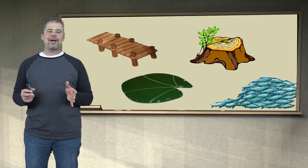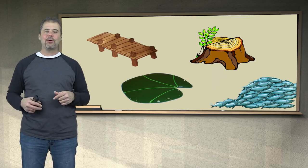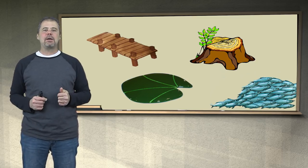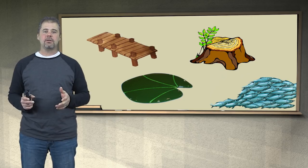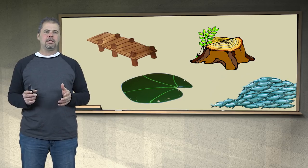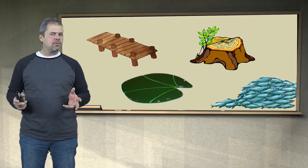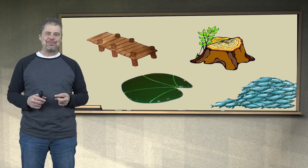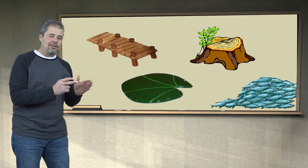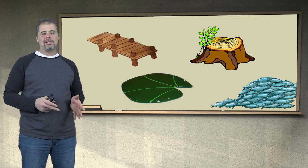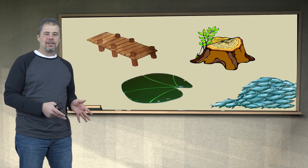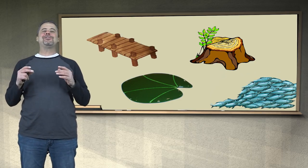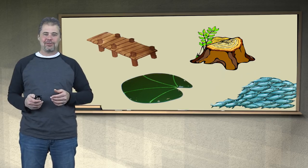I was giving a seminar at a muskie club many years ago, and during one of the breaks, a guy told me his favorite type of structure was a living structure. I had to ask him what a living structure was. He said a school of baitfish. The pier is not structure, the weed bed is not structure, the stump is not structure, and by all means, the school of baitfish is not structure.